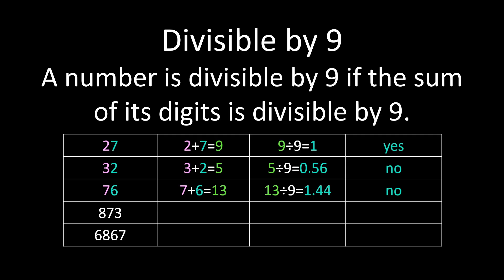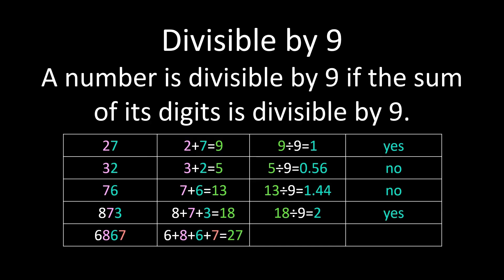Just like with all of our other rules, we can apply them to even larger numbers. With 873, we take all three digits and add them together: 8 plus 7 plus 3, and we get 18. When we take 18 and divide it by 9, we get a whole number answer of 2, so 873 is divisible by 9. For one final example, 6,867: we add all of the digits, 6 plus 8 plus 6 plus 7, and we get 27. Since 27 divided by 9 gives a whole number answer of 3, 6,867 is divisible by 9.